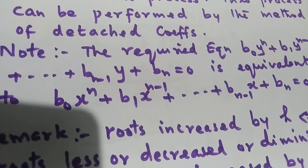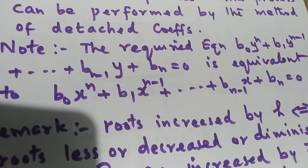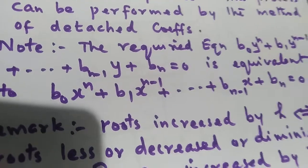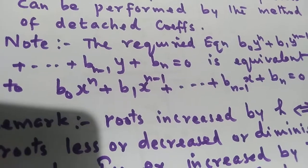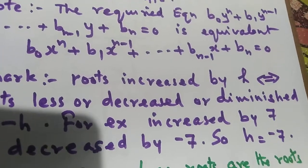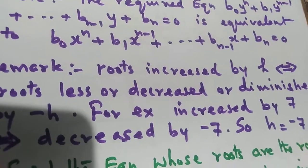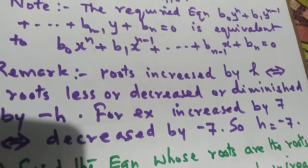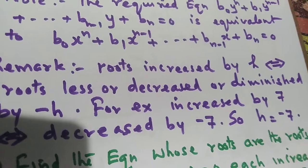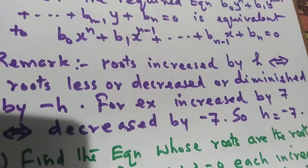This repeated division by (x - h) can be performed in a single step by using the method of detached coefficients, which can be explained through a problem. One thing to be noted: roots increased by h is equivalent to roots decreased by minus h. We have discussed the method when roots are decreased by h. Therefore, when the question asks to increase roots by h, we convert that into decreased by minus h.